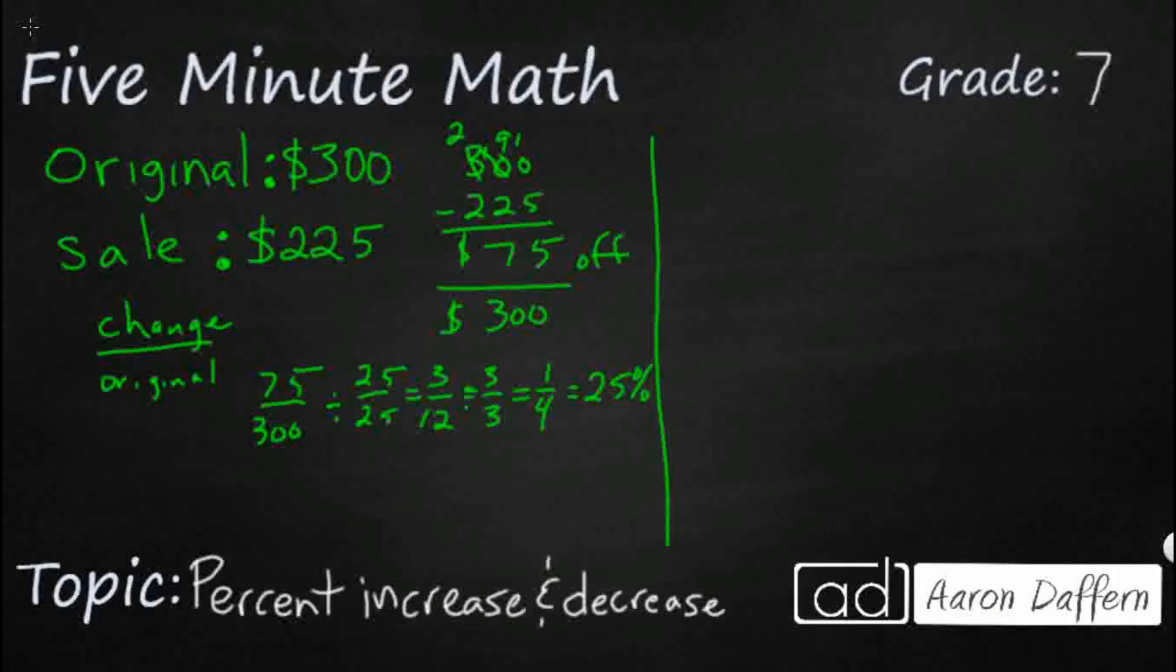The other way that we could do it is we could just make a proportionality. So we've got our sale price over our original price. We're going to keep our original price on the bottom as the denominator here, because that is going to equal 100% of our cost. And so we're going to use cross multiplication here to see what this equals.